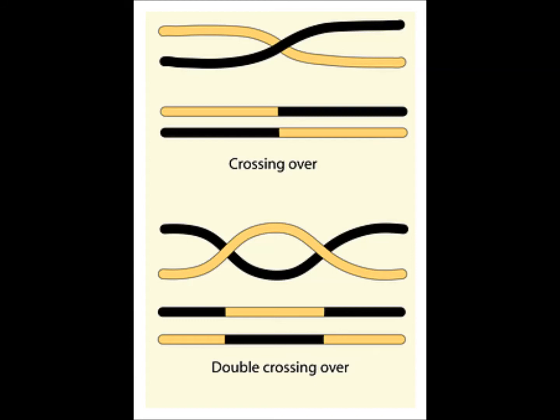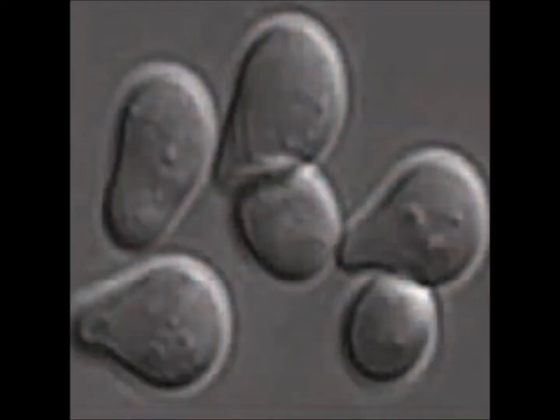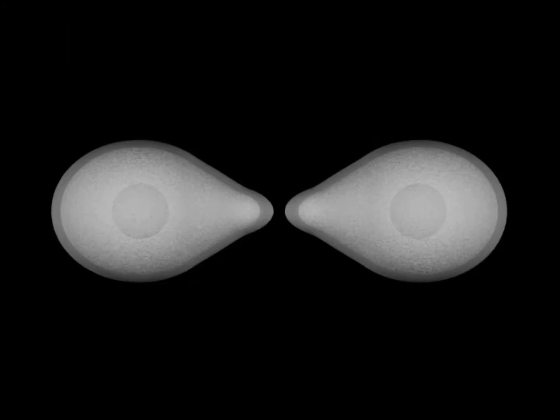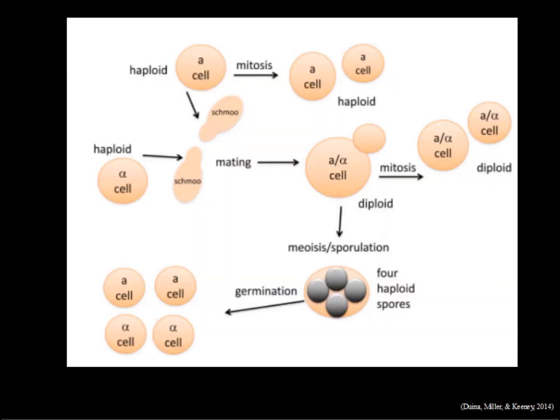When yeast is nutritionally stressed, for example by deprivation of either a carbon source or nitrogen, diploid yeast will sporulate. The diploid nucleus goes through meiosis, producing four haploid nuclei, which are then incorporated into four stress-resistant ascospores encapsulated in the ascus.